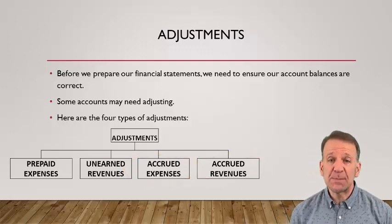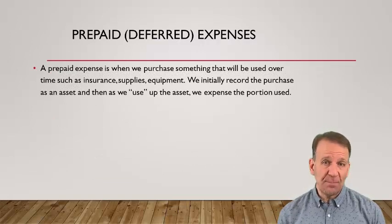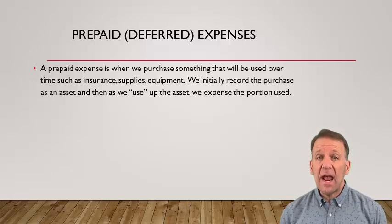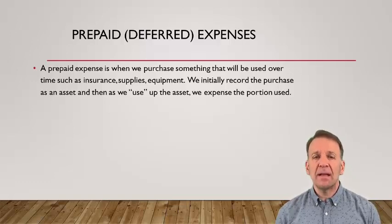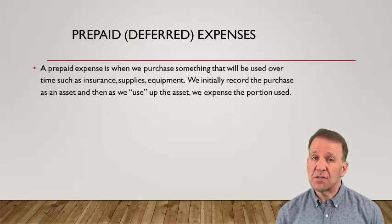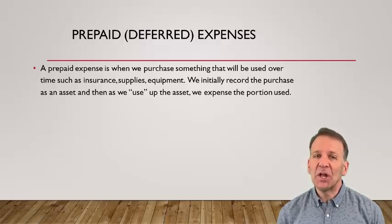The first adjustment that we will be reviewing is prepaid expense. A prepaid expense is when we purchase something that will be used over time. We initially will record this as an asset, and over time we will expense a portion of this asset as it is used up. A good example of a prepaid expense is insurance. An insurance policy is typically purchased for a six-month to one-year time frame. When we purchase the policy, we will record it as an asset. Let's take a look at how this is done.